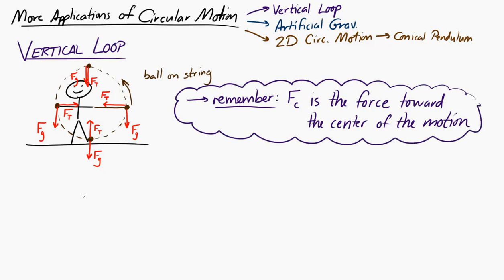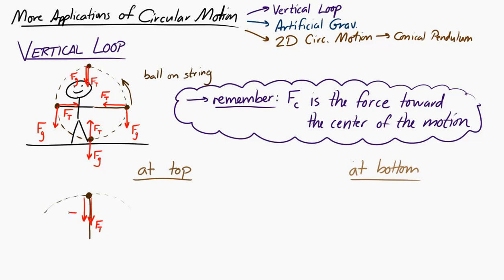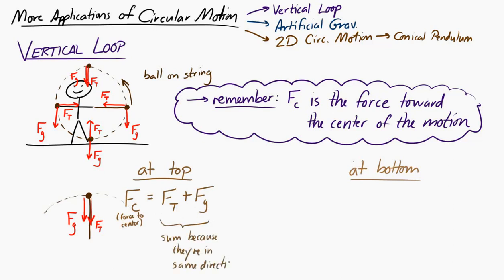Let's focus on two points: the top and the bottom of the vertical path. At the top, the tension force points toward the center along the string, and the weight also points toward the center — downward. So the centripetal force equals the tension force plus the weight. At the bottom, the centripetal force equals the tension force minus the weight. Here I'm only talking about magnitudes, ignoring direction.